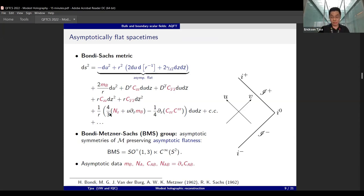This last two captures gravitational waves, and the Bondi-Metzner-Sachs group is really the asymptotic symmetry that preserves asymptotic flatness. This is the semi-direct product of the Lorentz group and supertranslations.